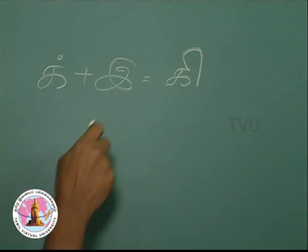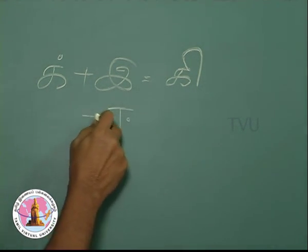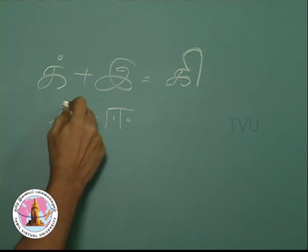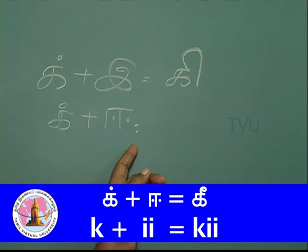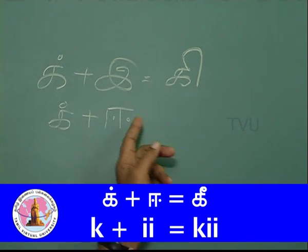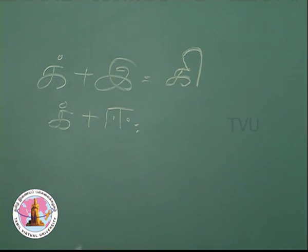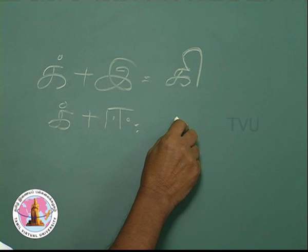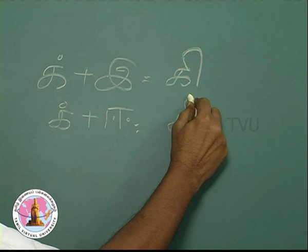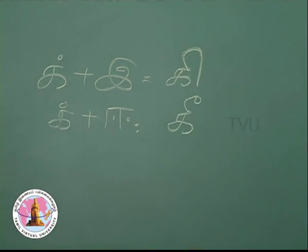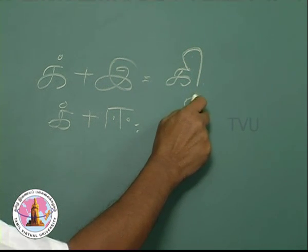Now we go to the next vowel, that is ee. K plus ee, kee. This is short ke and this is kee, the long one. The same symbol is to be cut in the middle and then rounded off. The same hook will be cut in the middle and rounded off.